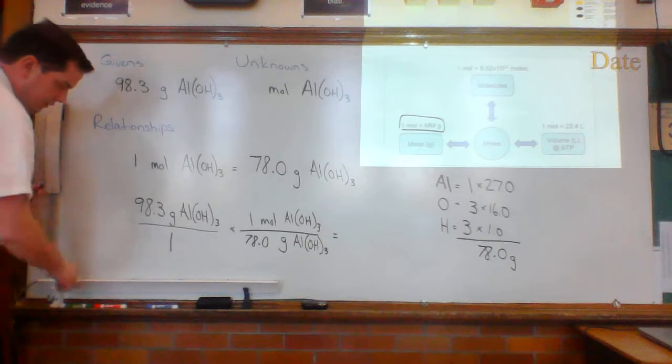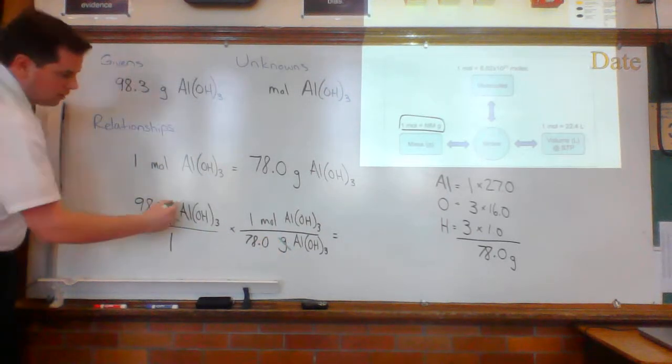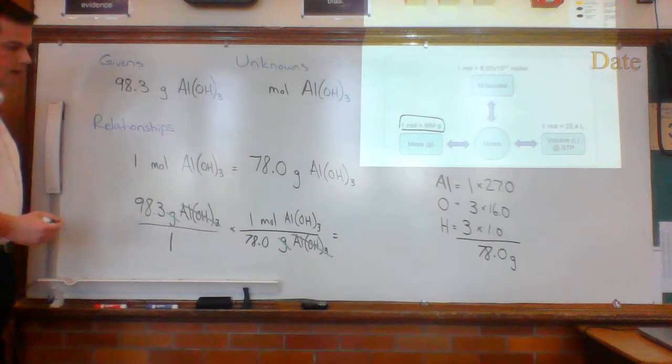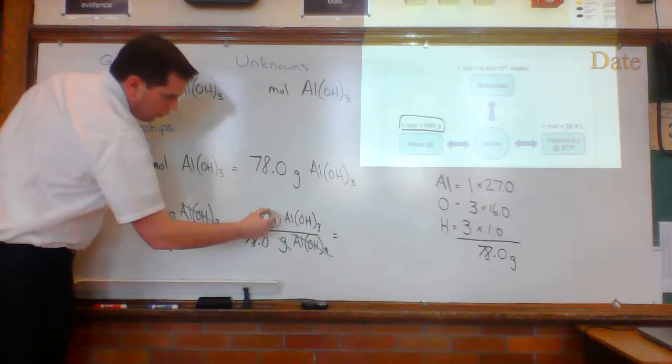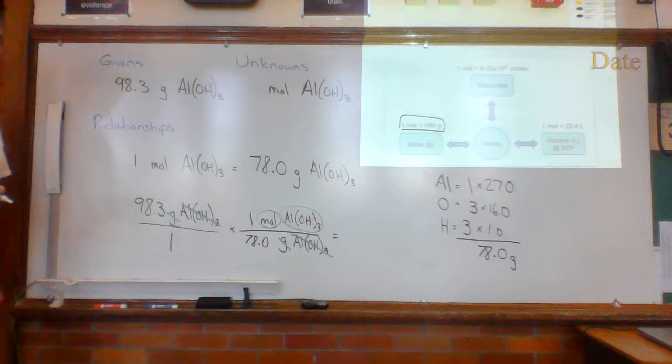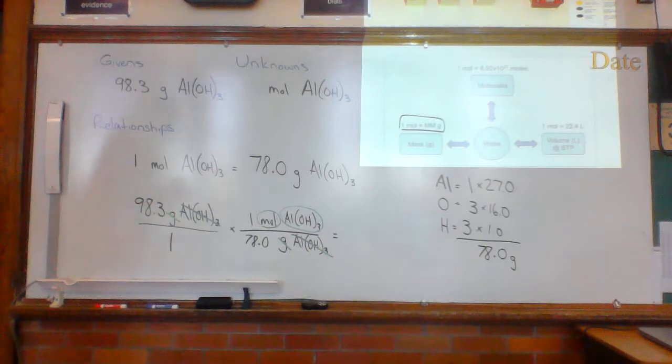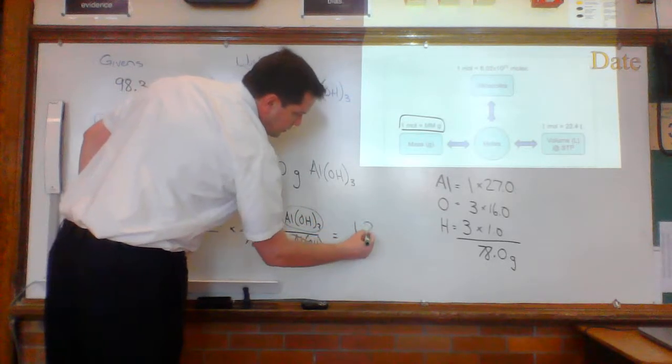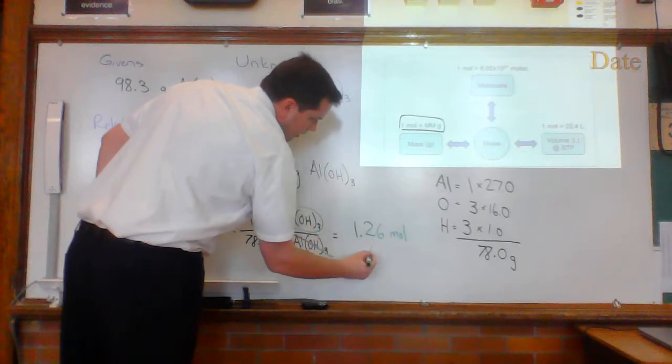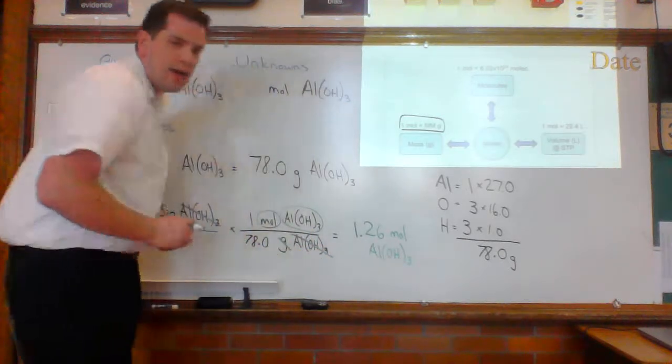When I go to do the math, grams cancels grams. Aluminum hydroxide cancels aluminum hydroxide. And the only thing I'm left with is moles and this one right there, that aluminum hydroxide right there. So when I plug this into my calculator, I should get 1.26 moles of Al(OH)3. And now I'm done.